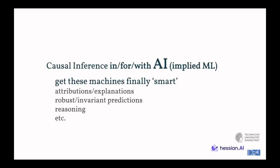However, in our work specifically, we look at the intersection with AI and implied machine learning, so we are concerned with getting these machines to be finally smart, intelligent. That includes attributions, explanations, it includes robust or invariant predictions, it entails reasoning, and all these other similar tasks.